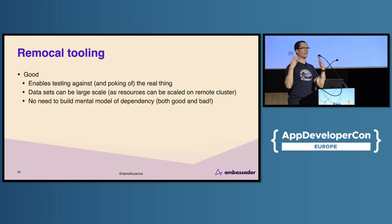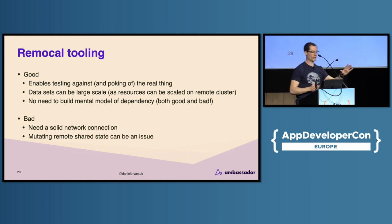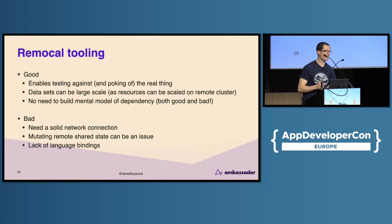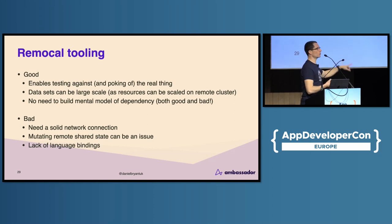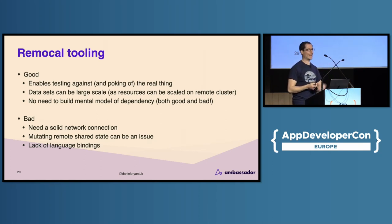There is no need to build a mental model of a dependency — you can literally connect up to the cluster and start calling APIs with Postman or the CLI. The bad: you do need a solid network connection. Mutating shared state, as with most of our lives as developers, is the bane of existence — if you're sharing a staging environment and modifying shared state, you might break someone else's tests. There is also a lack of language bindings. Mocks are idiomatic to your language, service virtualization tools have SDKs for all main languages, but a lot of Remocal tools do not yet have language bindings.